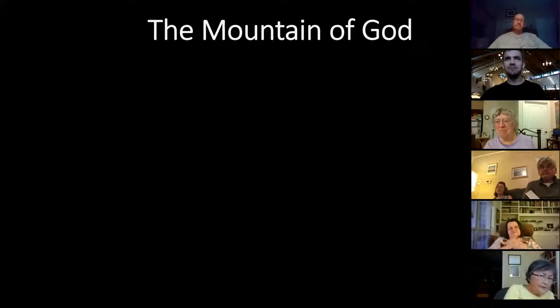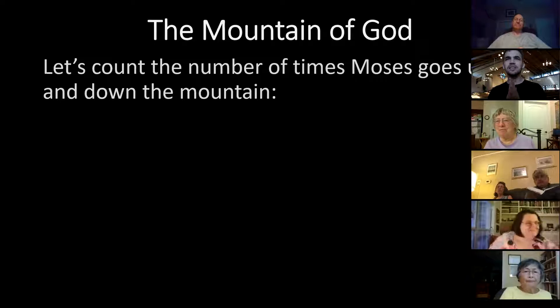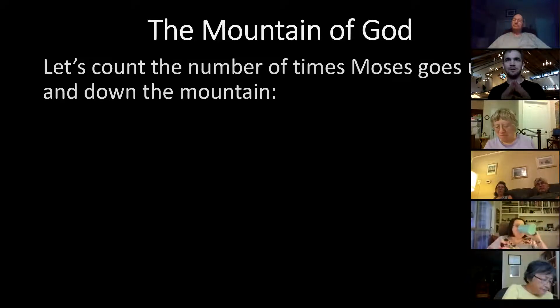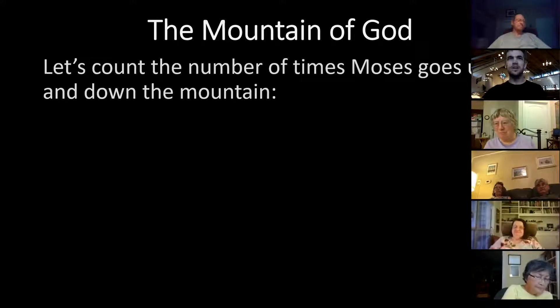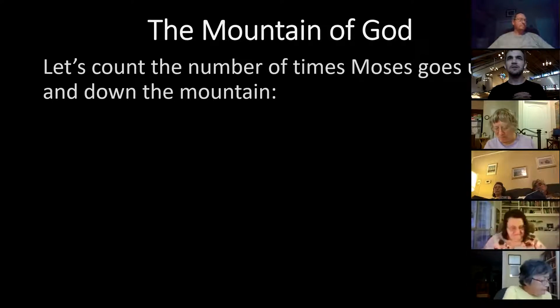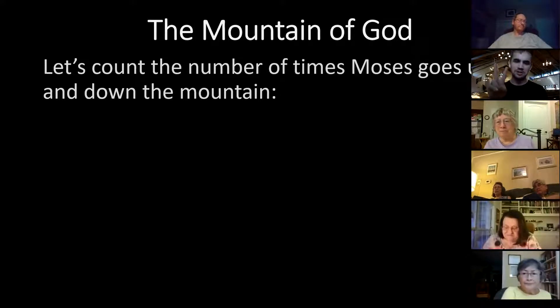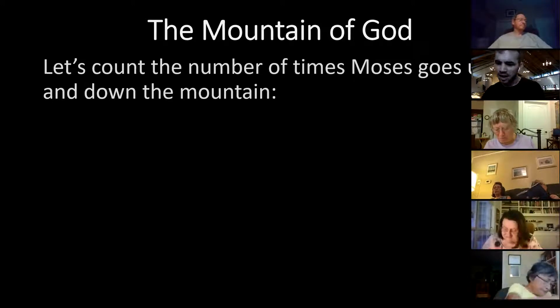I mentioned beforehand that we see Moses kind of go up and down, and up and down, and up and down. I want to count the number of times God has Moses use the divine stairmaster here, because I think it says something about how we've gotten some narratives knitted together. Did any of you catch where the first time that Moses goes up and down the mountain was? Brittany, I see you holding up two fingers — is that verse two, or is that two times? Verse two, I believe, is the first time he goes up. Yes — verse three, Moses went up to God. Very good.